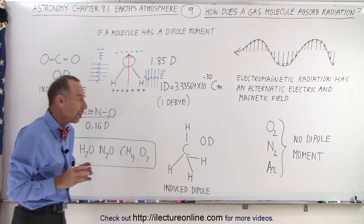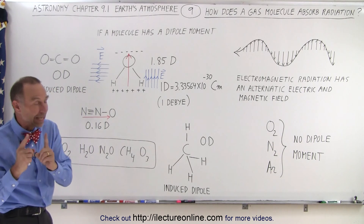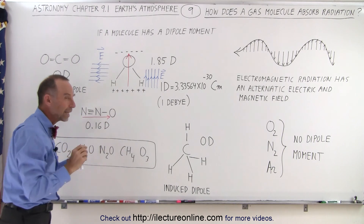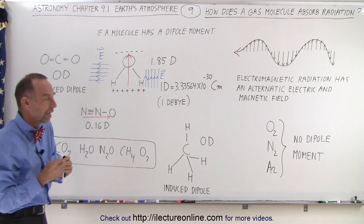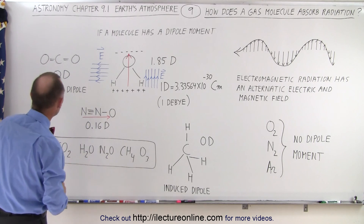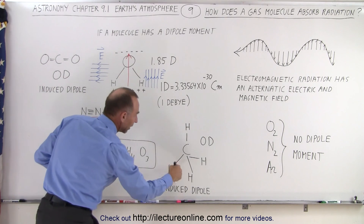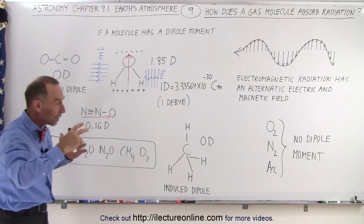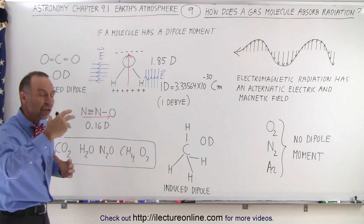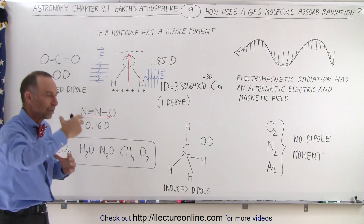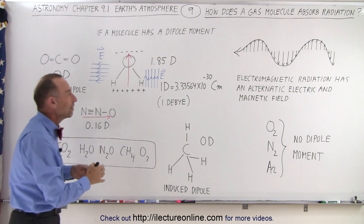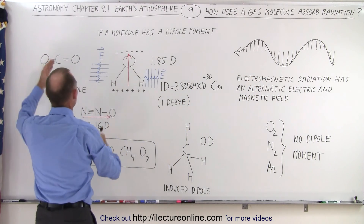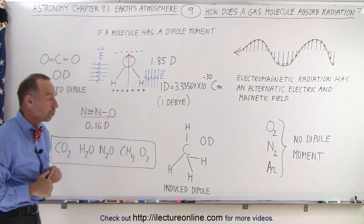Only a handful of molecules are able to absorb radiation, because either they have a dipole moment — such as water vapor or nitrous oxide — or they can be induced to have a temporary dipole moment through vibration. Normally carbon dioxide and methane do not have dipole moments; they have zero dipole moment. But when you get them to vibrate through collisions, they will have temporary dipole moments, and while they're oscillating with those temporary dipole moments, there can be an interaction between the electric field oscillations of the electromagnetic radiation and the temporarily induced dipole moments of those molecules.